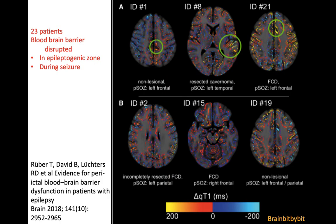This blood-brain barrier leakage was demonstrated in a nice study in 2018. They looked at 23 patients hospitalized for surgery, performing MRI with gadolinium in both the interictal and ictal phases. When comparing T1 imaging between ictal and interictal MRI, gadolinium leakage was visible during seizures but not in the interictal period, specifically in the location of the epileptogenic zone.